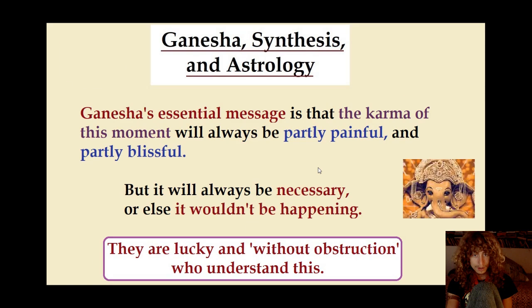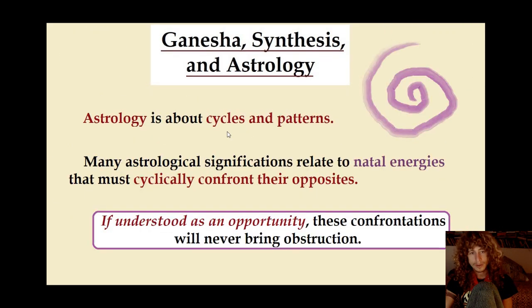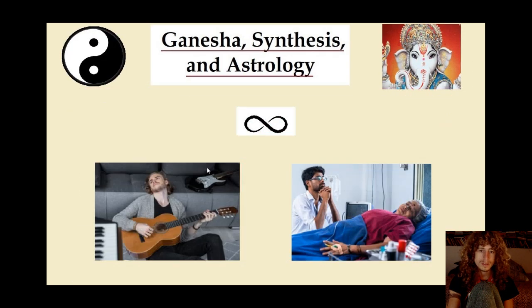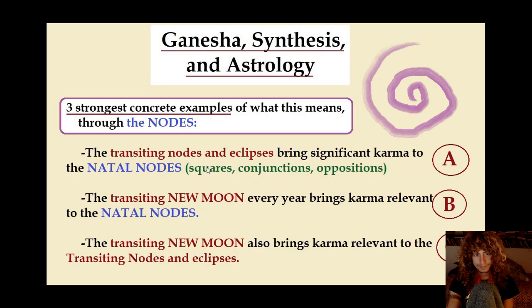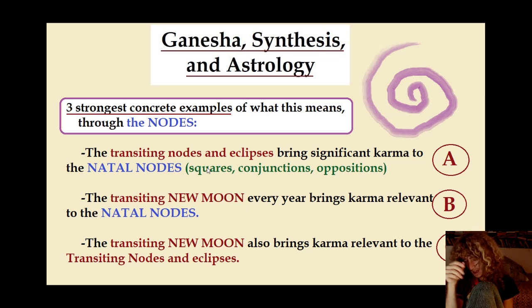Here's a little example of how the new moon can be understood. The new moon was very vague for me for a long time, but I've been practicing astrology for a while and the meaning is coming to me. Remember, astrology is about cycles and patterns. Many astrological significations relate to natal energies that must cyclically confront their opposites. The natal moon's nodes are a true primary key for understanding this. There are three ways of understanding how Ganesha can be applied in cyclical transits — these are the three strongest concrete examples I can give.